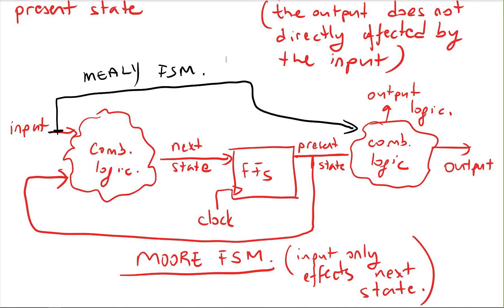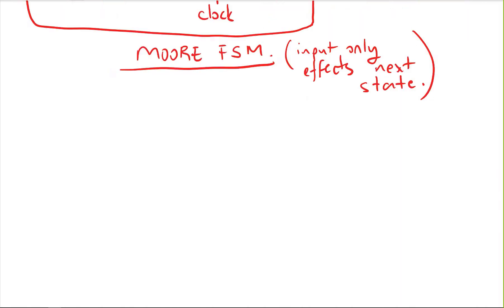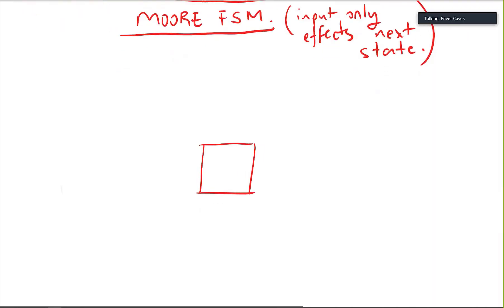In the previous video we saw the differences between Mealy and Moore finite state machines. In this video we will see an example of a finite state machine circuit, then we will look at state tables and state diagrams.